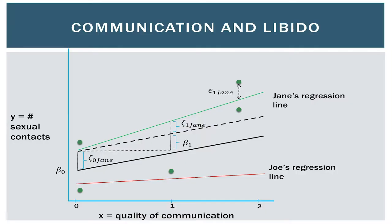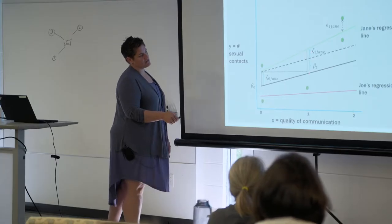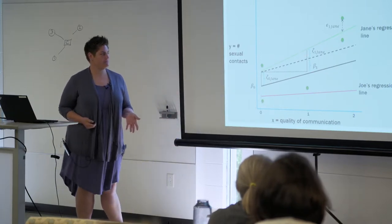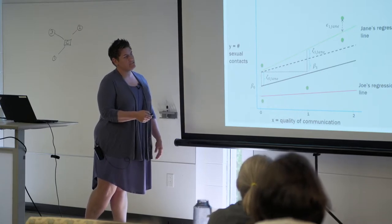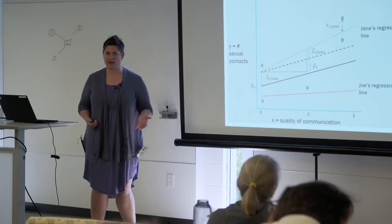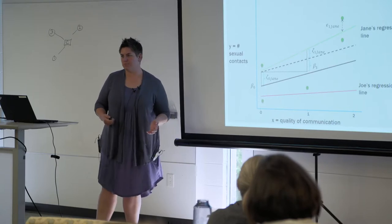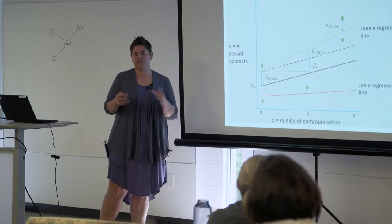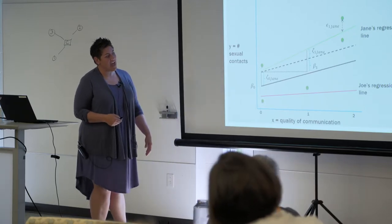This is what it ends up looking like. Here is my overall regression line — my overall slope and overall intercept. For Jane, here is where the parallel line would be if we were constraining it to be parallel. But now Jane gets a little slope bump. This is the standard slope, and this is Jane's slope, which is the standard slope plus her random coefficient. She also has a random intercept. So now we're systematically accounting for all the ways that Jane differs from the overall sample averages, because this is meaningful — it's not error. The reason Jane is different probably has to do with something about Jane or her particular constellation of alters.